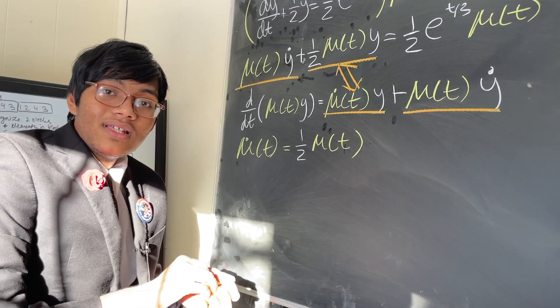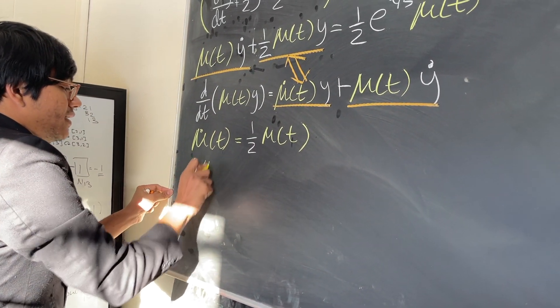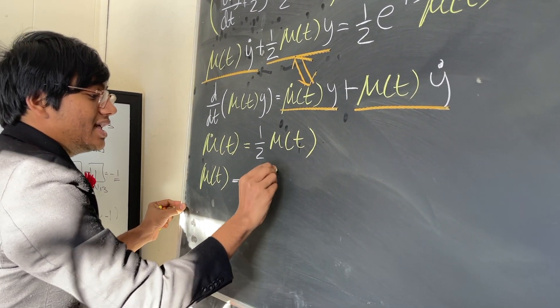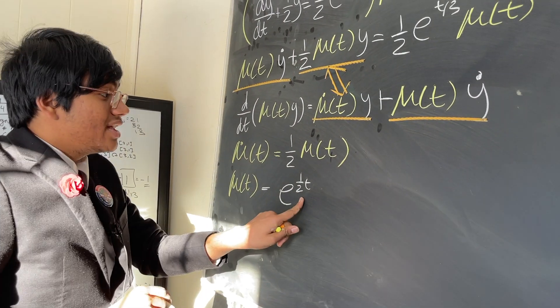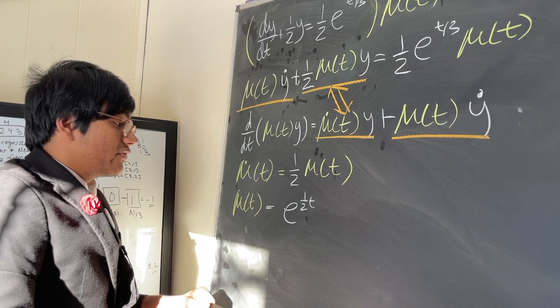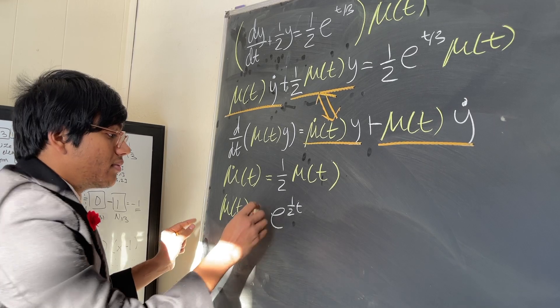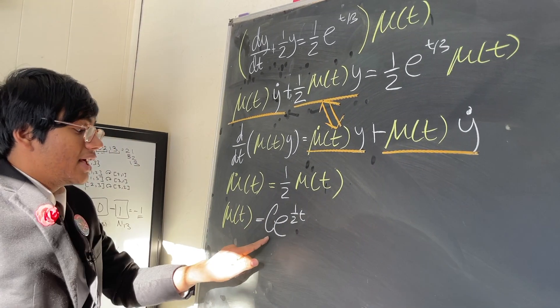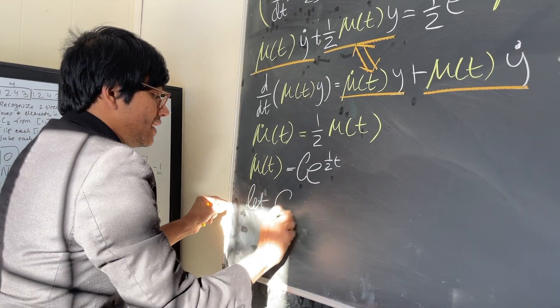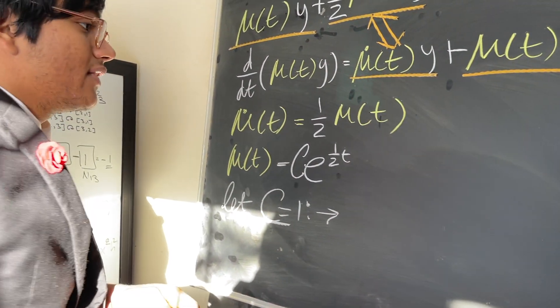So that means mu of t is nothing but e to the half of t. And if you're wondering why half of t, well, it's so that when you take the derivative you can take this half out and you're left with half of the original function. Now be careful, because this is not the most general form. If you want the most general form of mu of t, you have to multiply it by a constant c. Okay, for this example, we're going to just let c be one so it doesn't really matter in either case, but make sure you put this c for the most general form of mu of t.